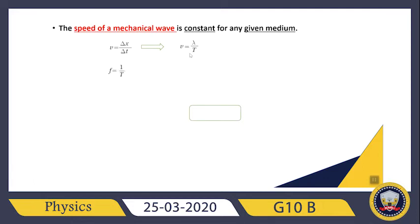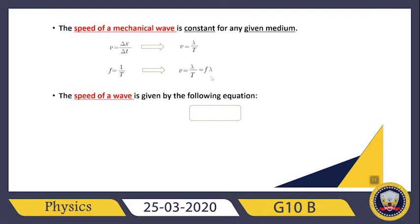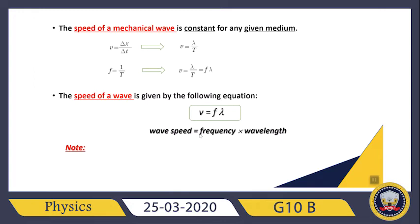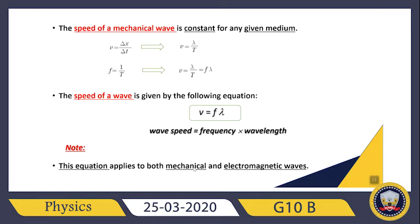Since f = 1/T, the frequency equals 1 over the period. We substitute 1/T with f, so V equals f multiplied by λ. The wave speed equals the frequency multiplied by the wavelength: V = f × λ. By the way, this equation can be applied for all waves — both mechanical waves and electromagnetic waves.